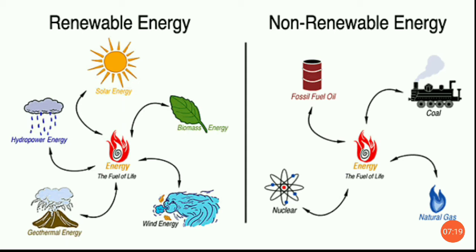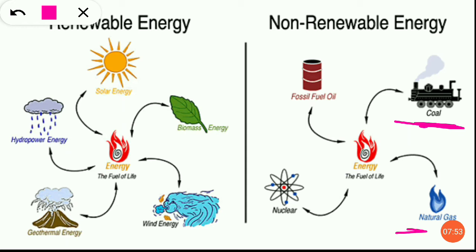For steam energy, water को boil करना पड़ता था, और उसके लिए continuously coal use करना पड़ता था। बांगलादेश से India coal की trains — मालगाड़ी — आती थीं जिनमें coal use किया जाता था। As you can see in this image, how coal was imported. Later, steam engines were replaced by petrol and diesel engines. But petrol, diesel, and natural gas — ये सब fossil fuels हैं — and nuclear energy too — ये सारी energies non-renewable sources of energy हैं।